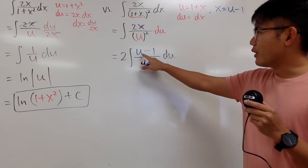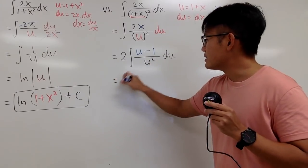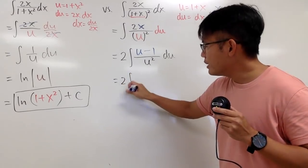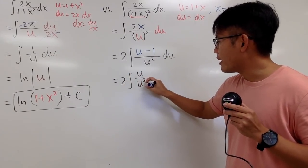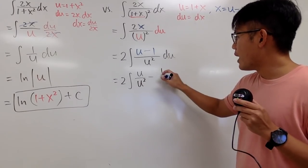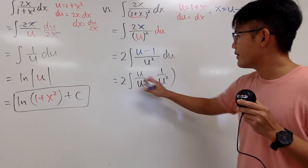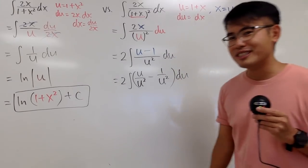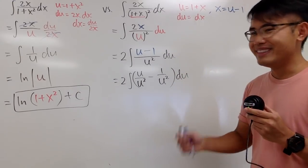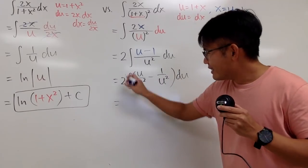And to do so, let me just split the fraction. And we see that this is the same as 2 times the integral. And we will have u over u squared. And then minus 1 over u squared. Yes, we haven't done any of the actual integration step yet. Because we are not ready. Right here, one more.